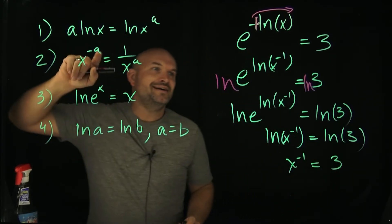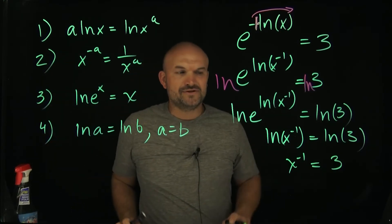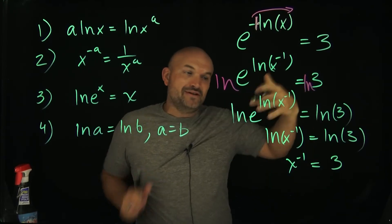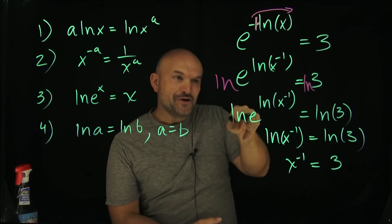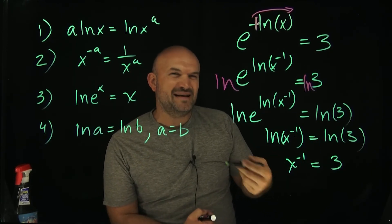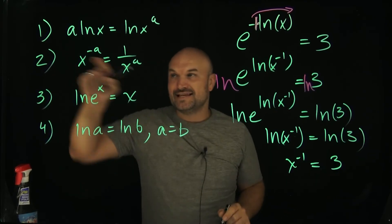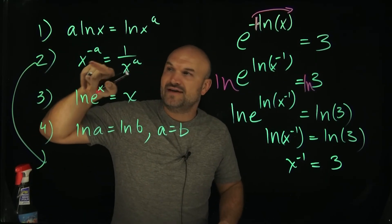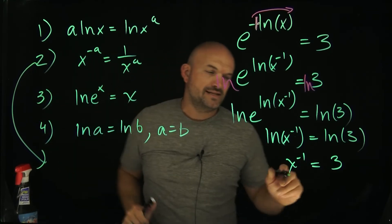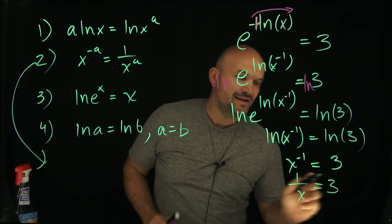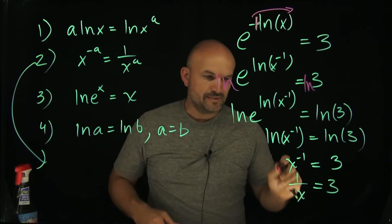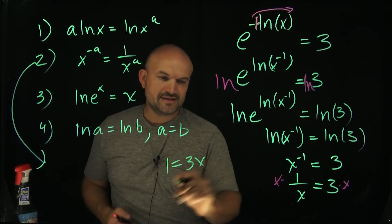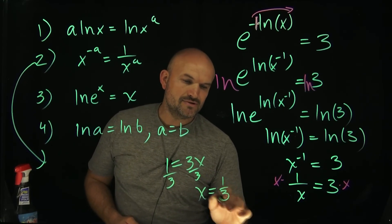Here is where the exponent property comes into play. A lot of students get confused about how to get rid of the negative 1 exponent. We don't want to take a logarithm of base x, because that would give a variable base. The rule of exponents says x raised to a negative power equals the reciprocal: 1 over x to the a. So x to the negative 1 equals 1 over x, which equals 3. Multiply both sides by x: 1 equals 3x, then divide by 3. Therefore, x equals positive 1/3.